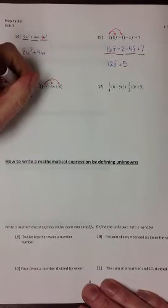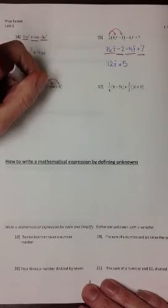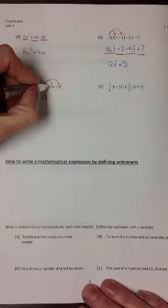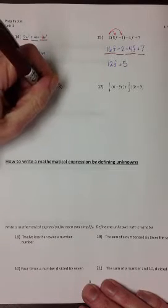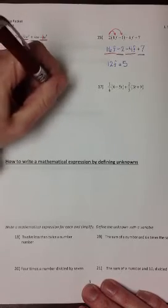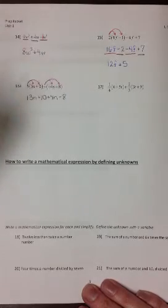So this will leave us with 13n plus 10. Then minus a negative 4n is going to give us a plus of 4n, and that negative times the 8 will make that minus 8.